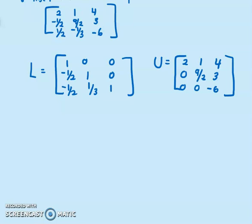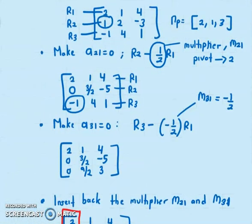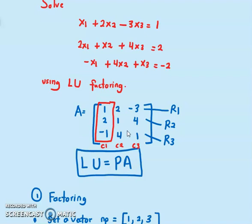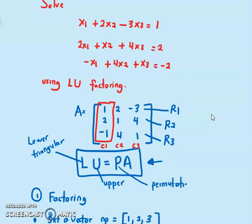This is a continuation from the previous video, where I showed you how to find the lower triangular and upper triangular matrices for a system of linear equations. We are solving this system using LU factoring with maximum column pivoting. The main goal is to find the matrix LU = PA, where L is the lower triangular matrix, U is the upper triangular matrix, and P is the permutation matrix.